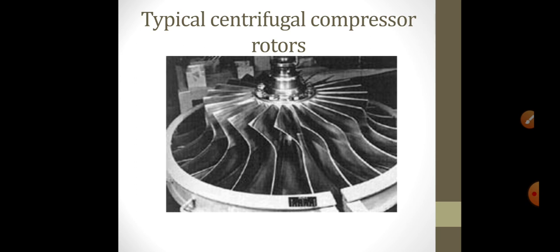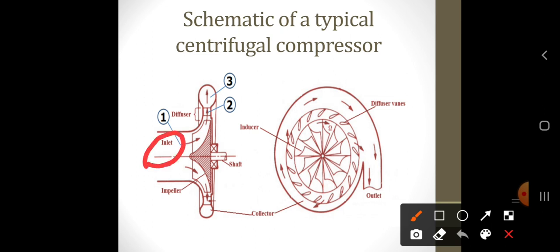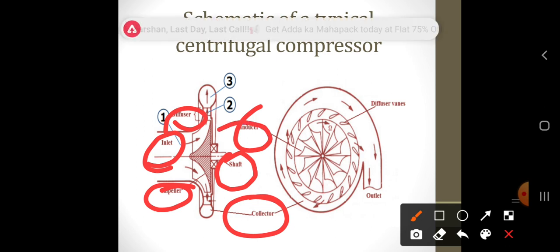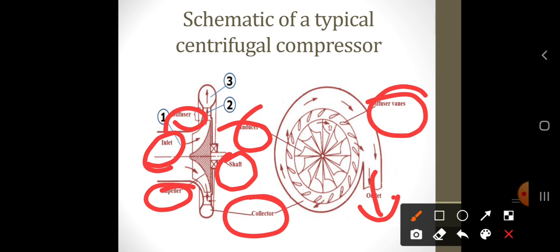Here we can see a centrifugal compressor rotor. In the schematic of a typical centrifugal compressor, we can see an inlet through which air enters, impellers which direct the air, a diffuser, and a collector where compressed air accumulates. This is driven by a shaft. In frontal view, we can see an inducer, a diffuser, and an outlet which is collected through the collector.